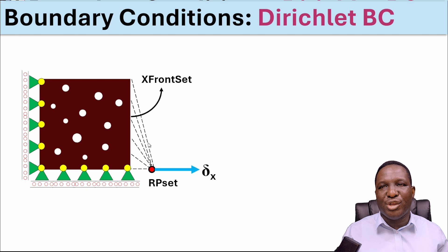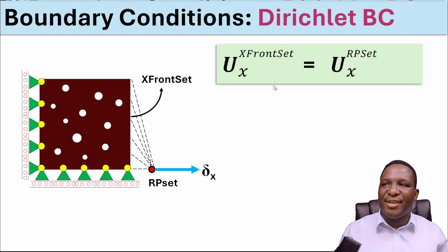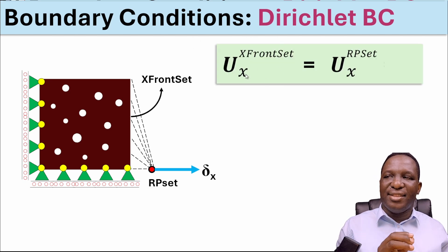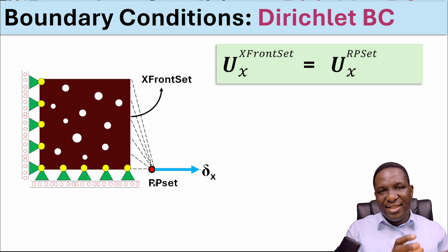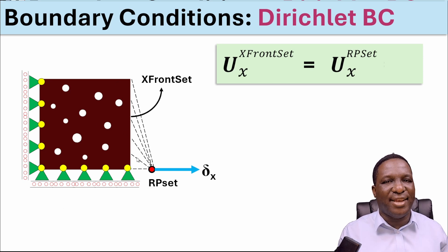What would that kinematic constraint equation look like? The x deformation of the front set nodes on this material must be equal to the deformation of the reference point node in that x-axis, written as U_x^XFrontSet = U_x^RPset. We are assigning the degree of freedom, the kinematic behavior of the node at the reference point, which is a single node, to all the nodes that are on the x front set. If we're moving it by one millimeter, every node will move by one millimeter, which is a principle of Dirichlet boundary condition.